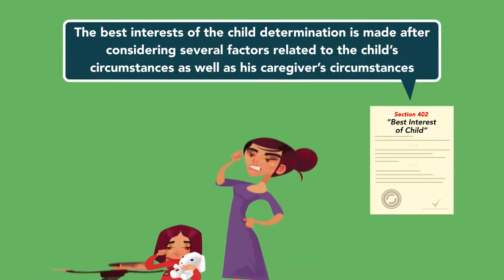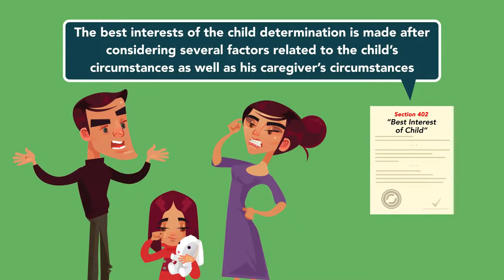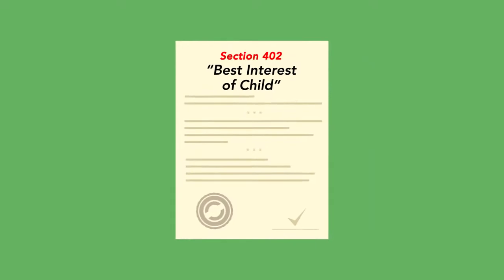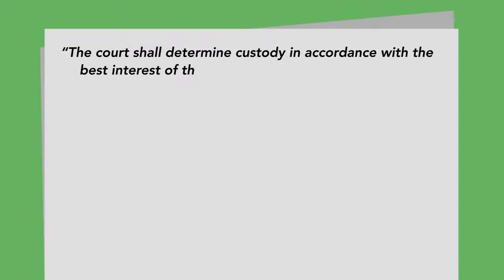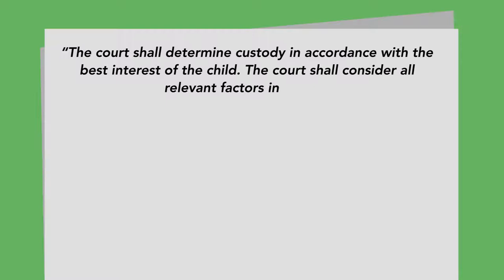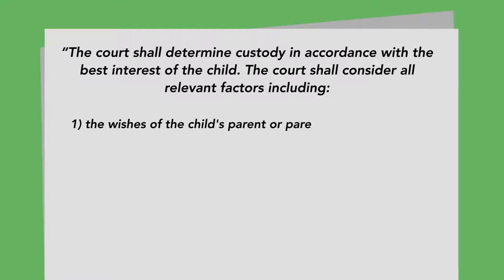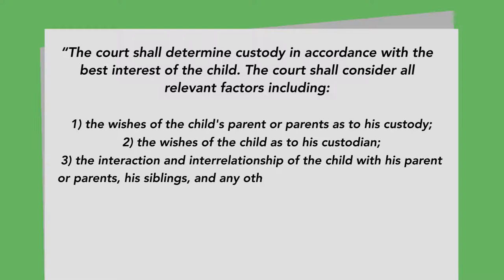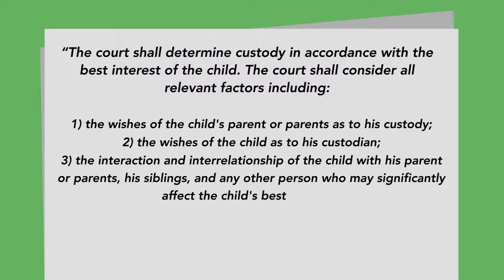The best interest of the child determination is made after considering several factors related to the child's and caregiver's circumstances, with the child's ultimate safety and well-being as paramount concerns. Section 402 directs courts to consider: (1) the wishes of the child's parents as to custody; (2) the wishes of the child as to his custodian; and (3) the interaction and interrelationship of the child with parents, siblings, and any person who may significantly affect the child's best interest.